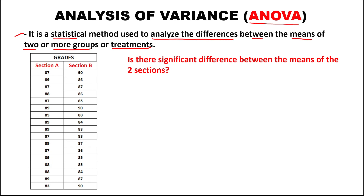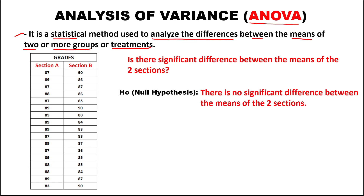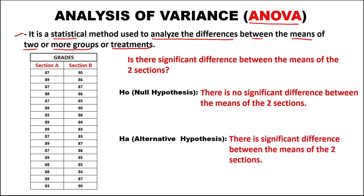We need to test if these two sections perform equally, or if one section performs better than the other. For the null hypothesis: there is no significant difference between the means of these two sections. For the alternative hypothesis: there is a significant difference between the means of these two sections.